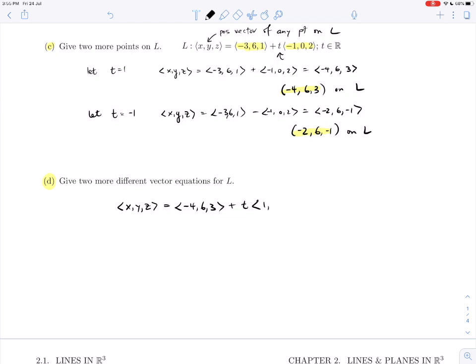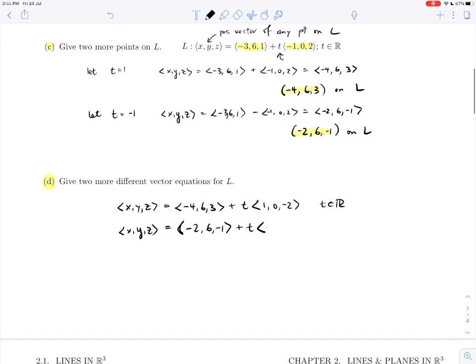Let's use the negative here. So (x, y, z) = (-4, 6, 3) + t(1, 0, -2) for t in ℝ. That's a valid equation for L as well. And here, so is this: if I use the other point we just found, (-2, 6, -1) + t... I could use D, I could use any multiple of D. Let's do 2 times D this time: (-2, 0, 4) for t in ℝ. These are both valid equations for L.